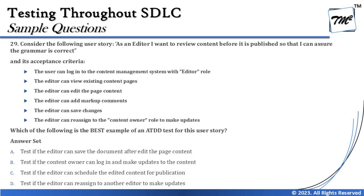Moving to Question Number 29, which is related to ATDD. The scenario says: consider the following user story — 'As an editor, I want to review content before it is published so that I can assure the grammar is correct.' The profile is editor, the activity is reviewing content, and the objective is assuring grammar is correct before publishing. That is the standard user story format: profile, activity, and outcome.